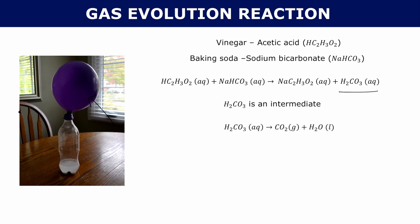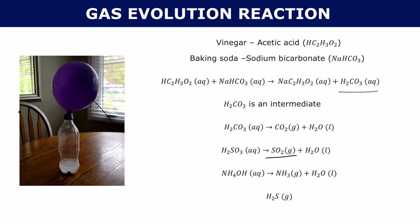There are two more intermediates you might come across. Sulfurous acid will immediately decompose into sulfur dioxide and water. Ammonium hydroxide will decompose into ammonia gas and water. The last one is a product you might find directly: instead of being aqueous or solid, it will be in gaseous form — and that's hydrogen sulfide.